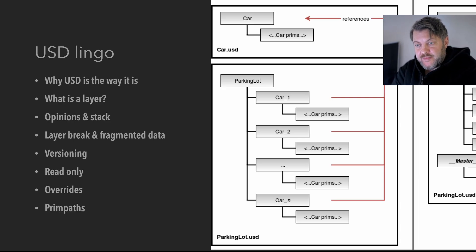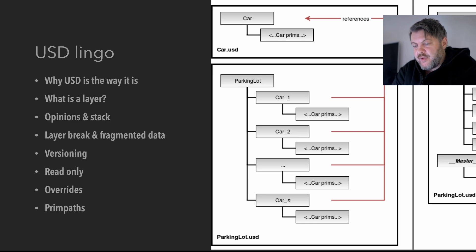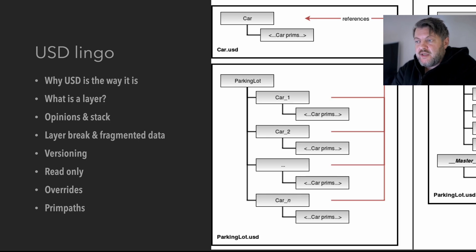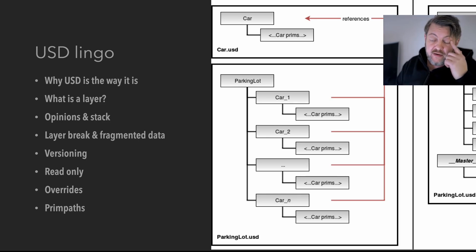Another potentially confusing concept is prim paths. By default every node has these. By default it's set to dollar OS, which just means it uses the same name as the node itself. So if you create a cube, it's going to be called 'cube one' — that's the prim path name.